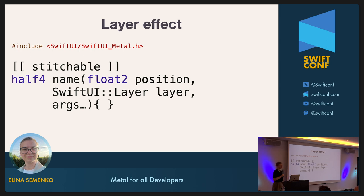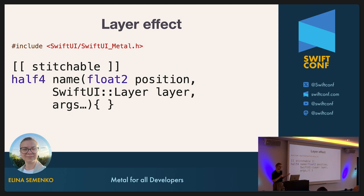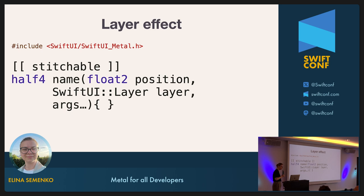The last effect is the layer effect. The shader function should have a matching signature — what's different is one more parameter: the SwiftUI layer. You also need to include the SwiftUI Metal header, otherwise it won't work — this is only required for the layer effect. The function takes the user-space coordinate and the raster contents of the view (the layer) as input, and returns the color for the destination pixel. The layer effect is useful when you need to calculate the result color with regard to the color values of surrounding pixels, making it good for implementing convolutional filters like blurs.